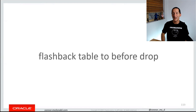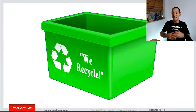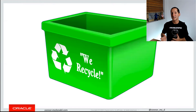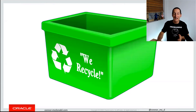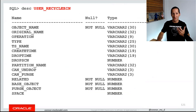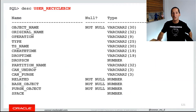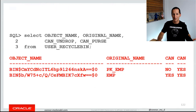So now it's called flashback table to before drop. It's the recycle bin metaphor — we've had this on PCs for a lot of years. You delete a file and what the operating system does is secretly just rename it and maybe move it to a secret folder, like the recycle bin or the trash can. It's the same in the Oracle database. There we have a view called user_recycle_bin, which shows you effectively a list of objects that have been dropped but not actually removed from the database.